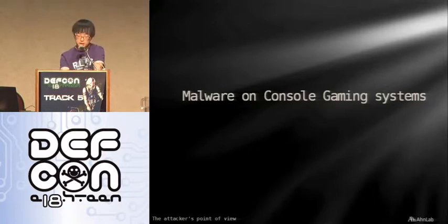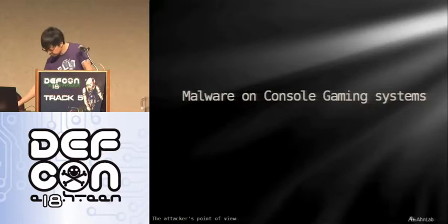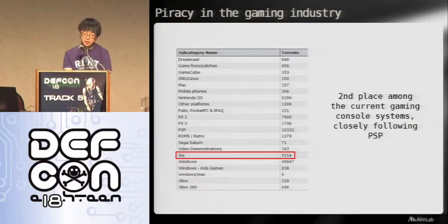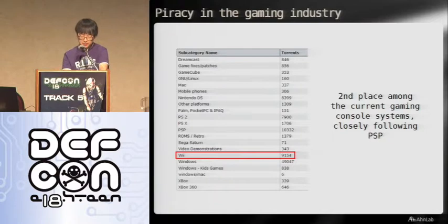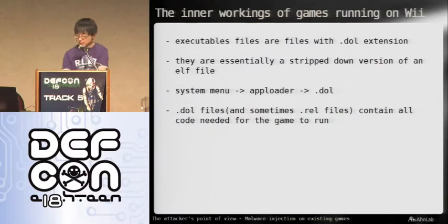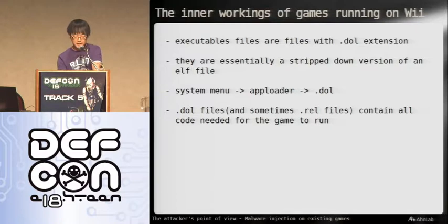Now we'll talk about malware on gaming consoles. We particularly targeted the Nintendo Wii. As you can see on the picture on the left side, Wii is marked as the second most pirated system among all gaming consoles. Also according to a survey, a lot of companies put Nintendo Wii in their break room to increase morale — and I've seen a lot of Nintendo Wiis myself at a couple of companies I visited, so we decided to give it a shot. Now that we have the target system, we should know how games work on the Wii. All games contain a single file with a .dol extension, which you can think of as a main executable file, and this .dol file contains all the code needed to run the game.